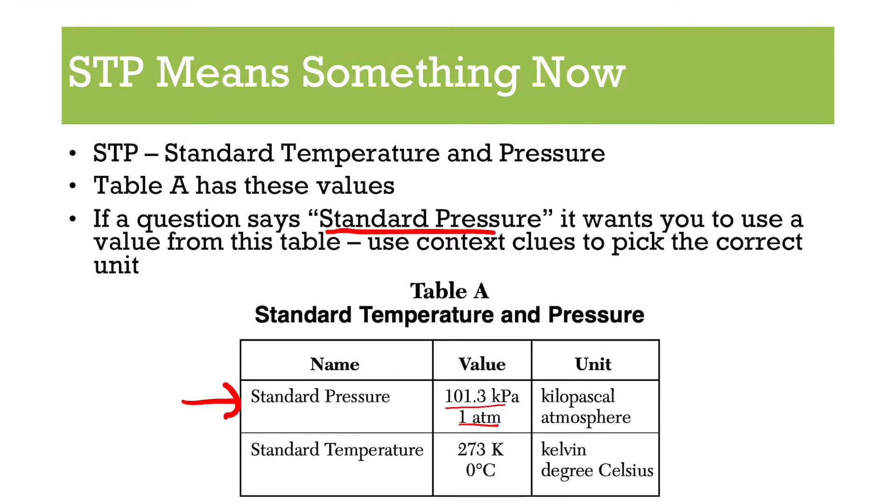Now, generally, you want to keep your units consistent throughout a question. So if the question gives you kPa, well, then you're going to use 101.3. If the question gives you ATM, you're going to use ATM, be consistent with your unit. If you have the option to choose, does not matter which one you use.